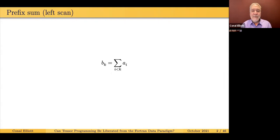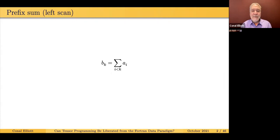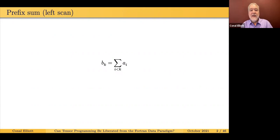I want to start with a very simple computational problem which has the following specification. This is called a prefix sum, or more generally a left scan. The idea is that we have a collection of input values, the A_i's, and we want to generate a collection of output values B_k's. The rule is simply this: each output is the sum of the previous inputs. This is called an exclusive left scan — exclusive means that the K-th output does not include the K-th input, just only the values before it.